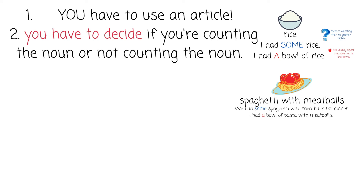You have to choose which article you're going to use. Generally, if you want to be specific and count the nouns you would use "a" — for example, "I had a bowl of rice". But if you want to just be casual and non-specific, you'd say "I had some milk". It's fine.